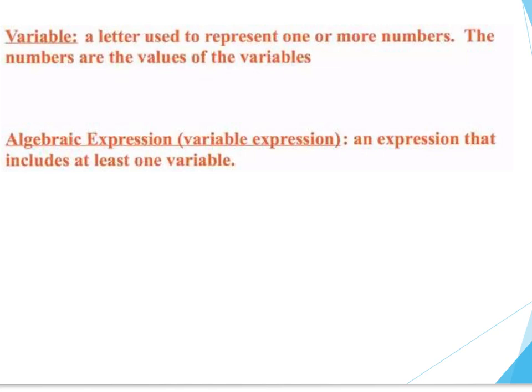When we get into algebra, this is where it gets a little tricky because we're going to start throwing letters into the mix — we're no longer just using numbers. We may use letters such as x, y, z, or even Greek letters like theta or alpha or beta. What we're going to use is a letter to represent something. That's what a variable is — a variable is something we use to represent something we don't know.